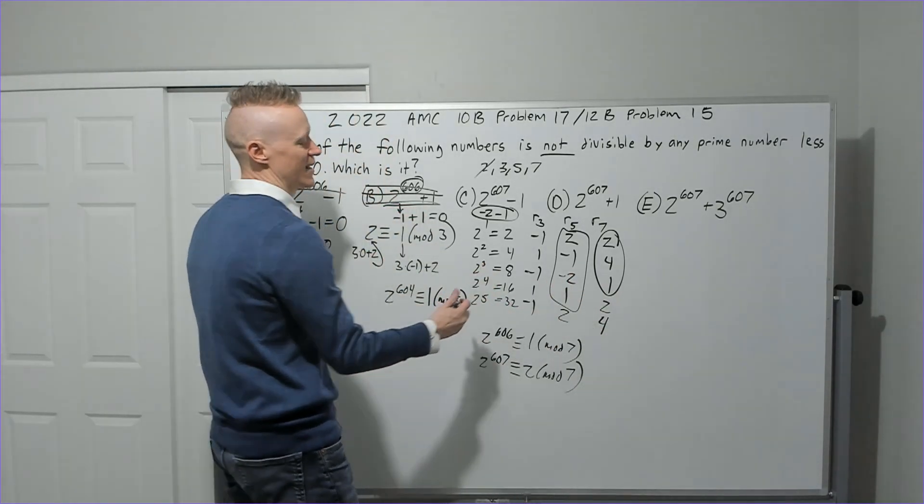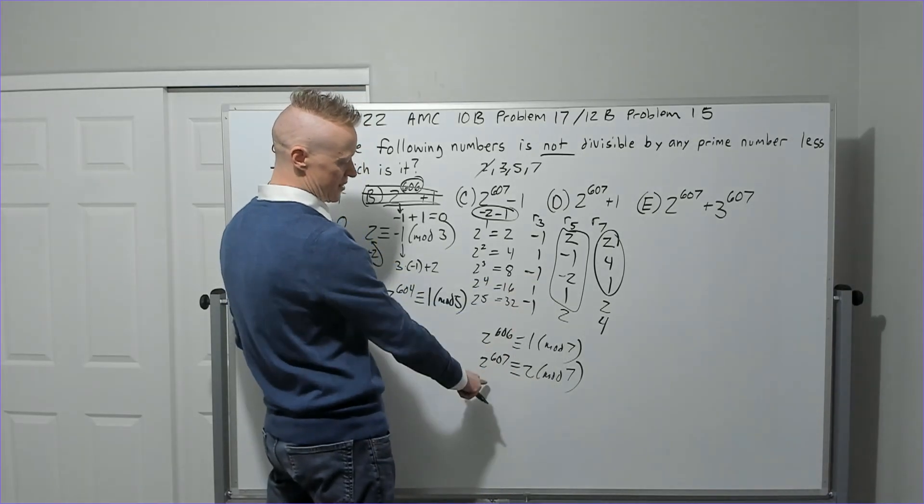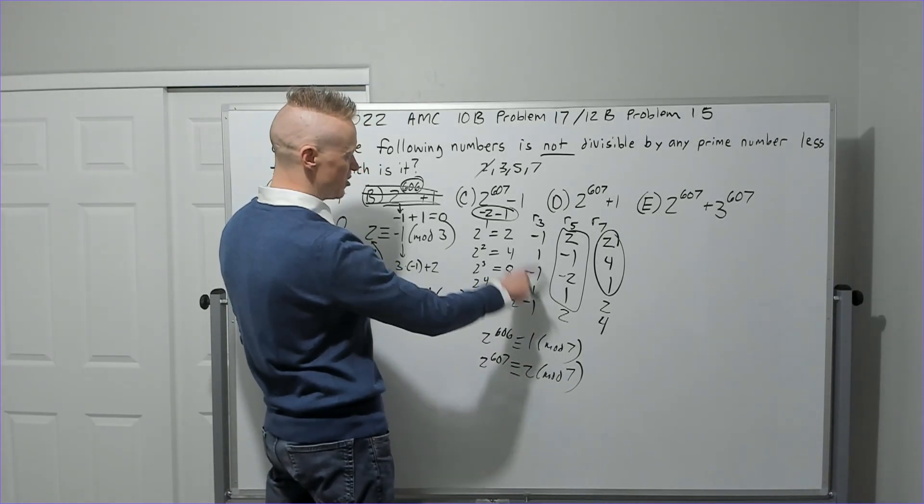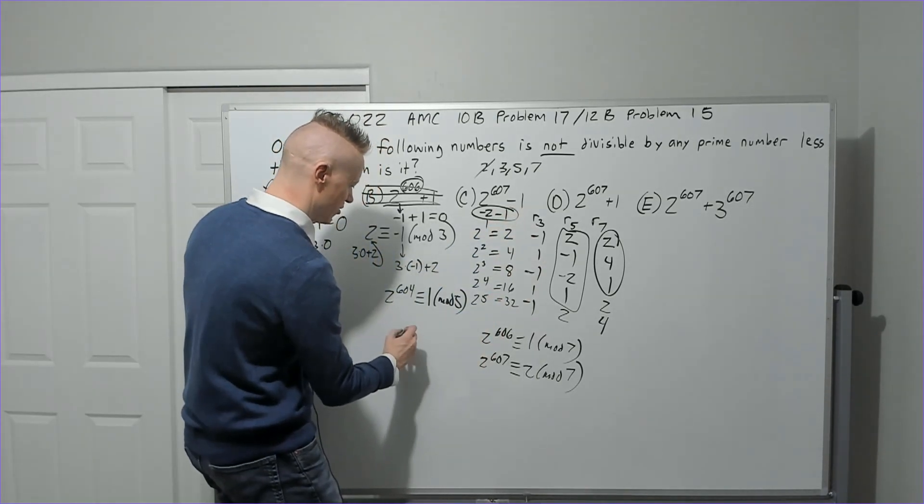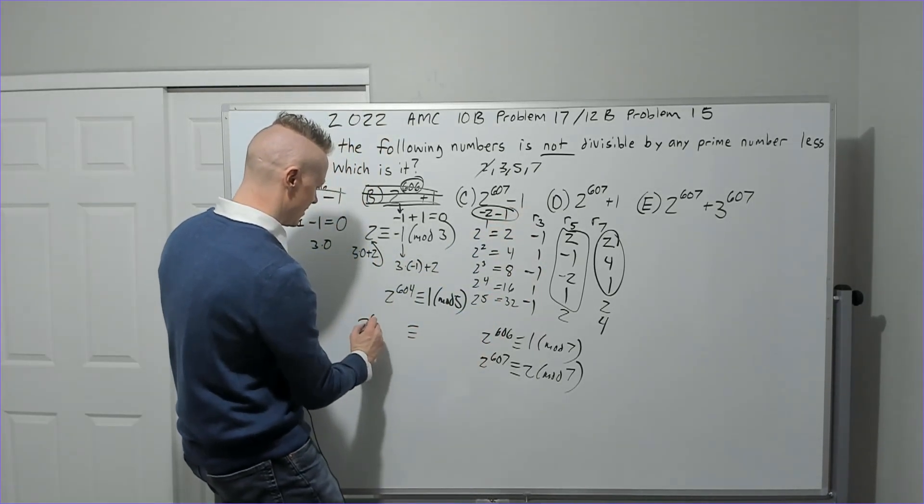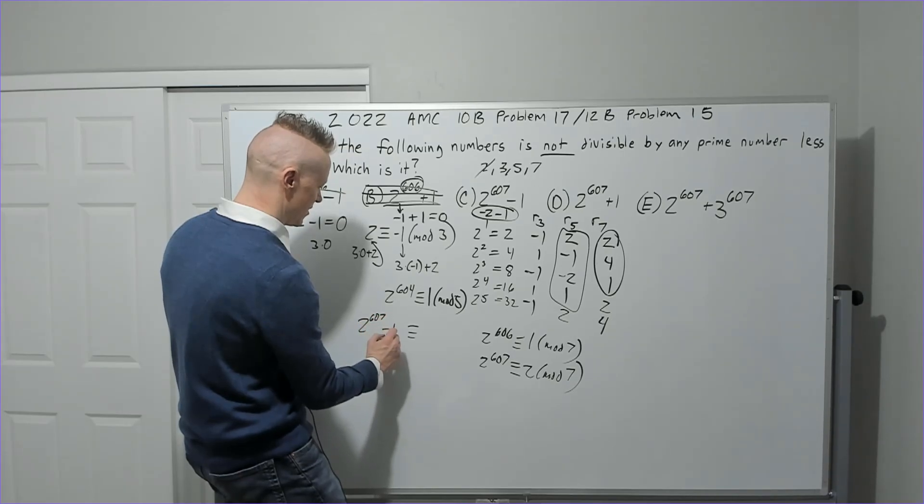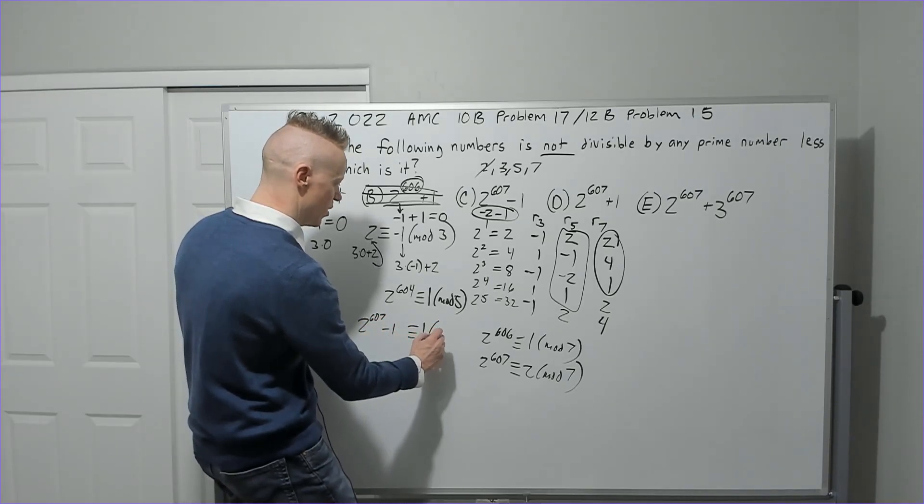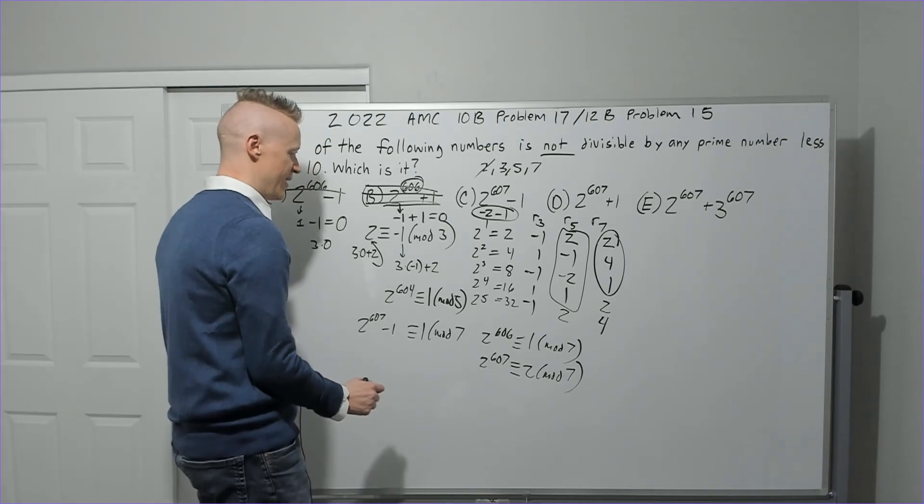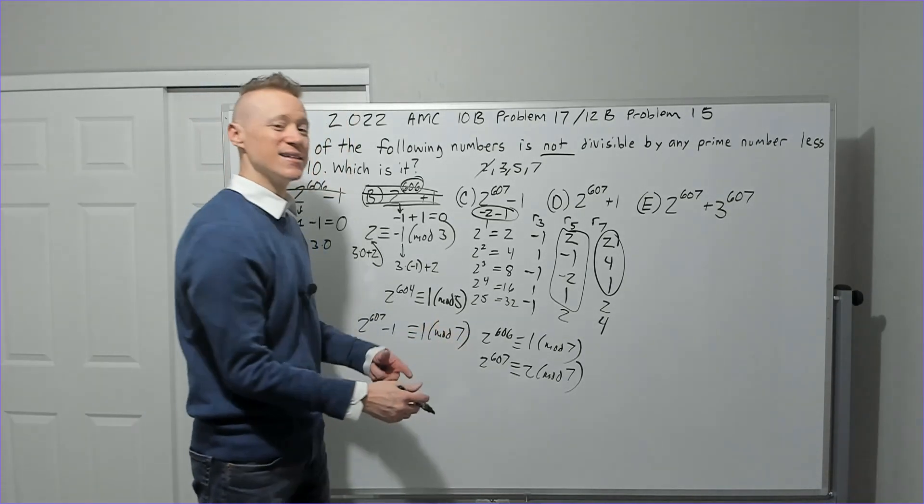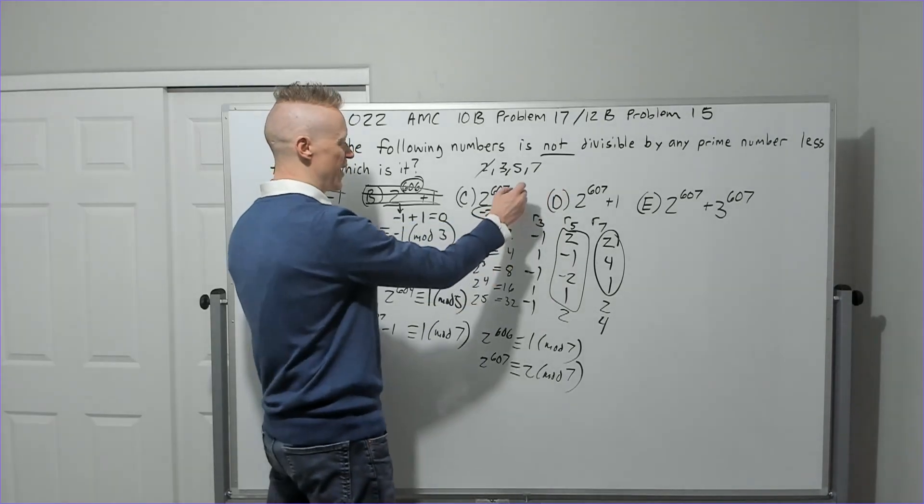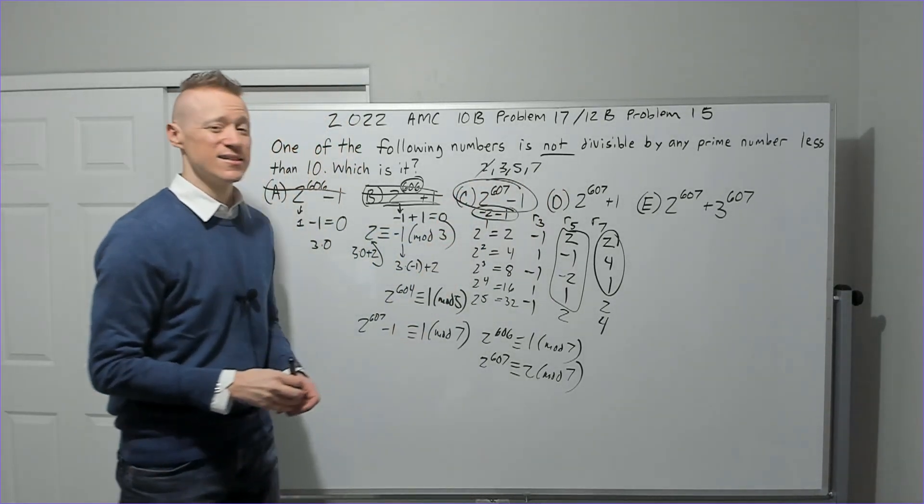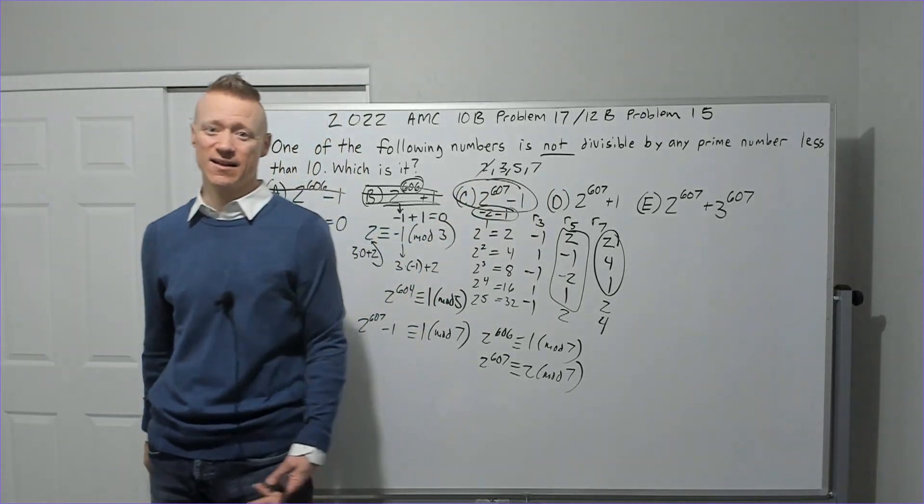Okay, so 2^607 is congruent to 2, and when you subtract 1 that would be congruent to 1. So 2^607 - 1 is congruent to 1 mod 7. Because it's congruent to 1 mod 7, it is not divisible by 7. Three, 5, and 7 all fail. Our answer is choice C. Let's go ahead and get another one done.